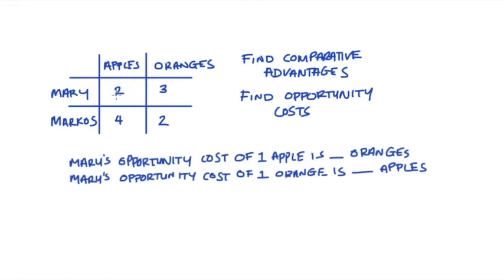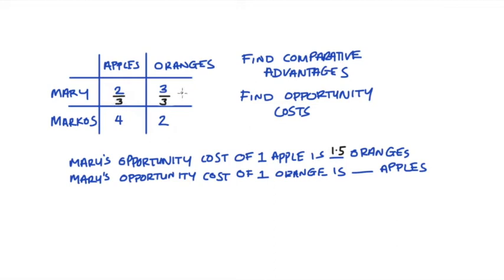Let's take Mary first. If Mary makes two apples she essentially gives up making three oranges, because she's spending all of her resources making apples and no resources on oranges. Dividing both sides by two, we see that Mary gives up three over two, or one and a half oranges, for one apple. Thinking about oranges: since she gives up two apples to make three oranges, dividing both sides by three, Mary gives up two thirds of an apple for one orange.